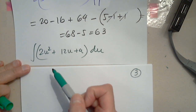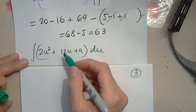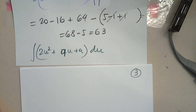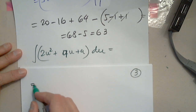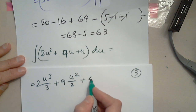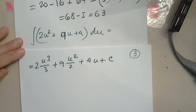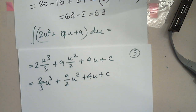So 2u squared — yes, you have to distribute; we don't know how to integrate a product. After distributing, it's 2u squared plus 9u plus 4. This is an indefinite integral, so the antiderivative is 2u cubed over 3 plus 9u squared over 2 plus 4u plus constant C. You can rearrange it as two-thirds u cubed plus nine-halves u squared plus 4u plus C.